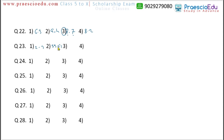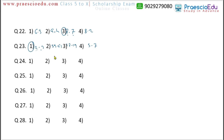Question 23: the options include 2-3, then 59-61, 17-19, and 5-7. The pairs 59&61, 17&19, and 5&7 are all twin prime number pairs. But 2 and 3 are prime numbers that are not a twin prime pair. So option 1 is the different one.